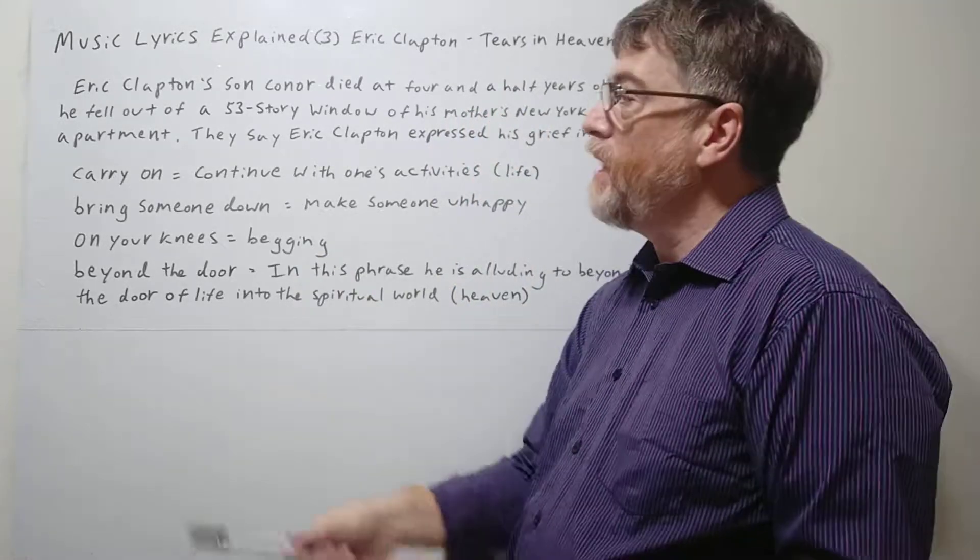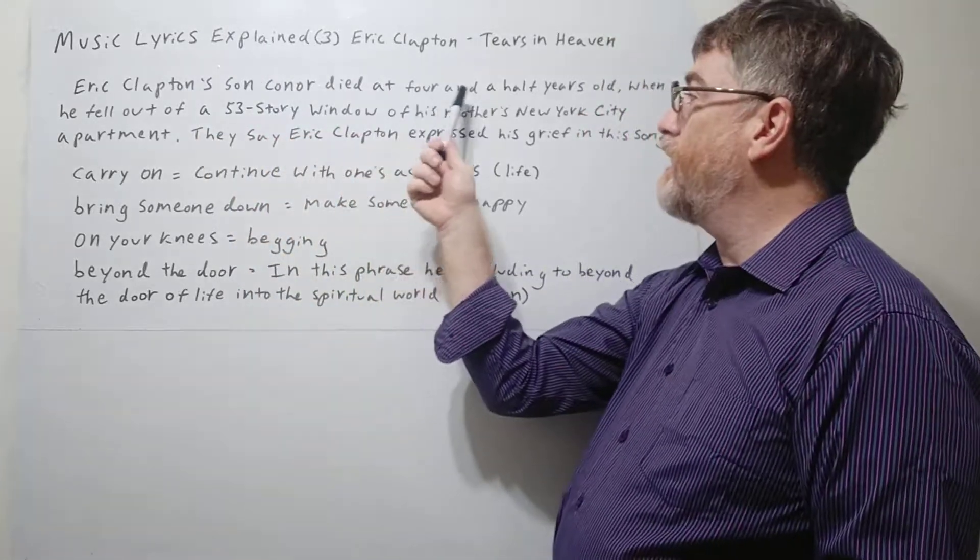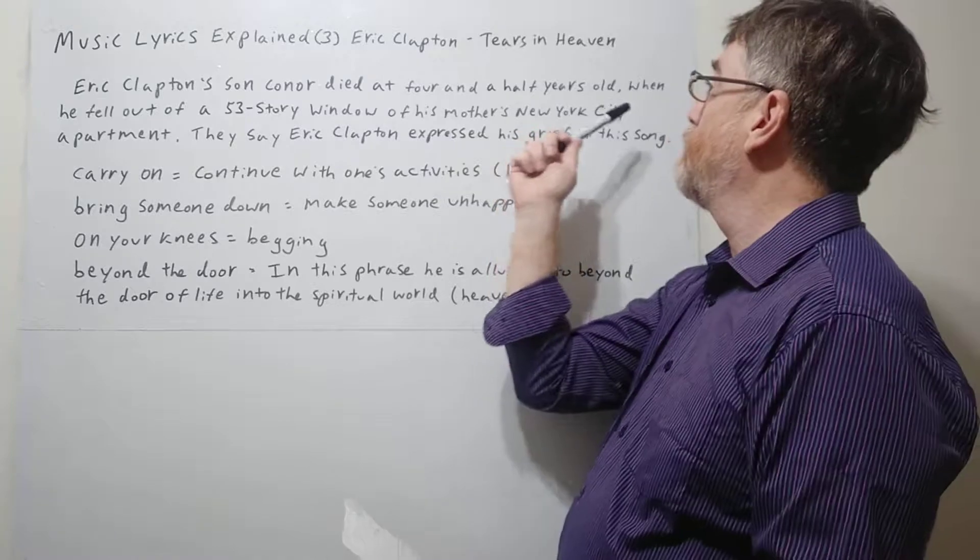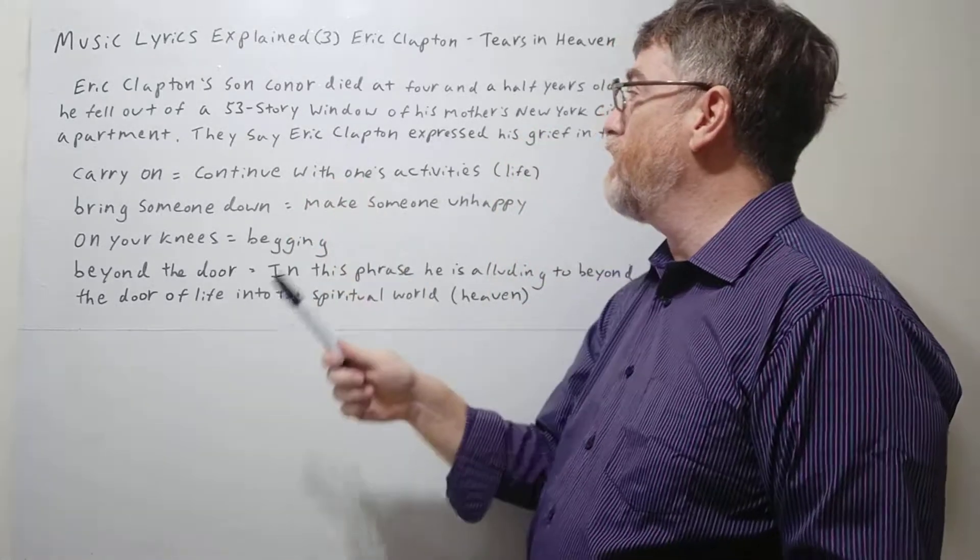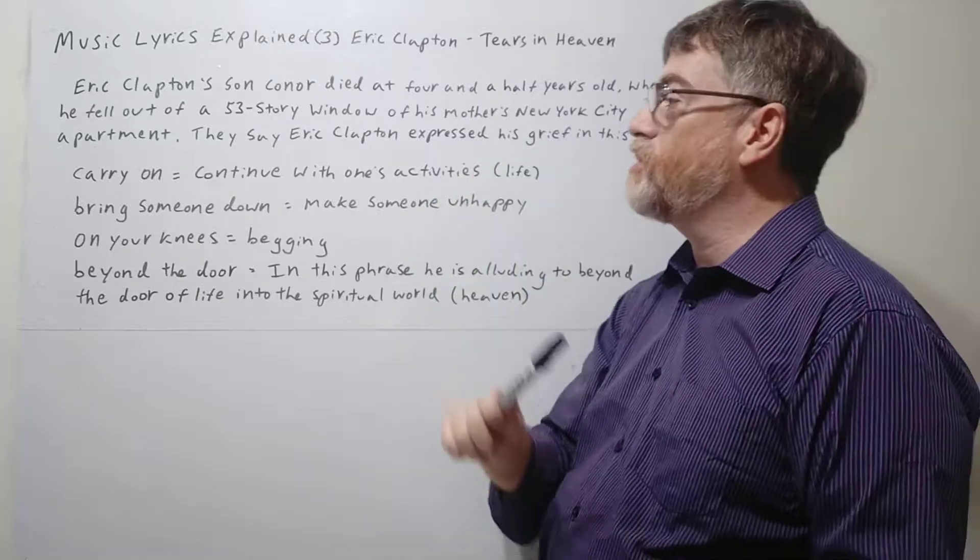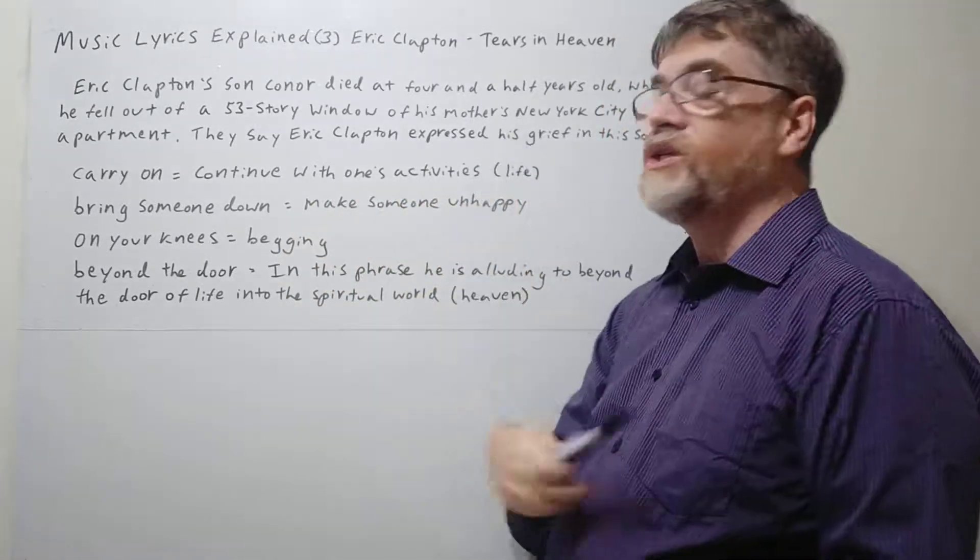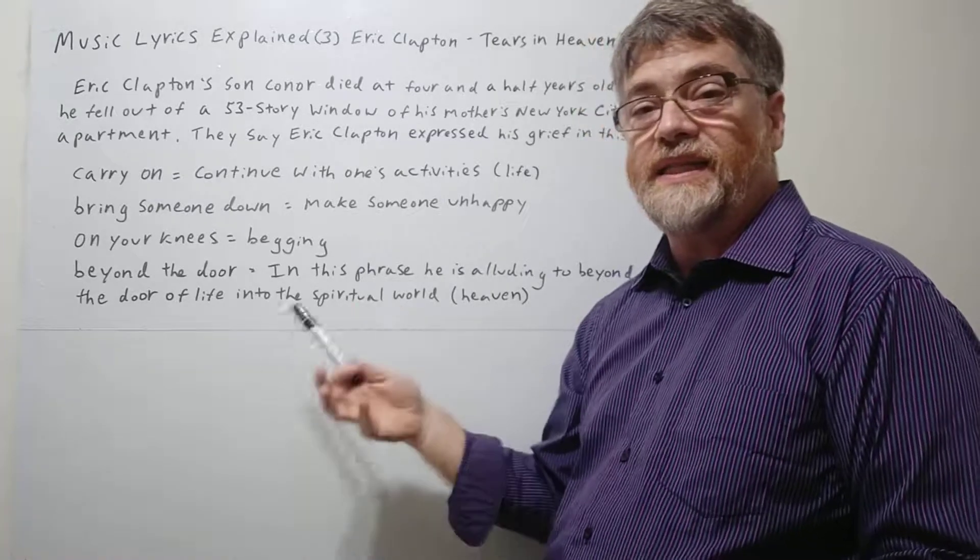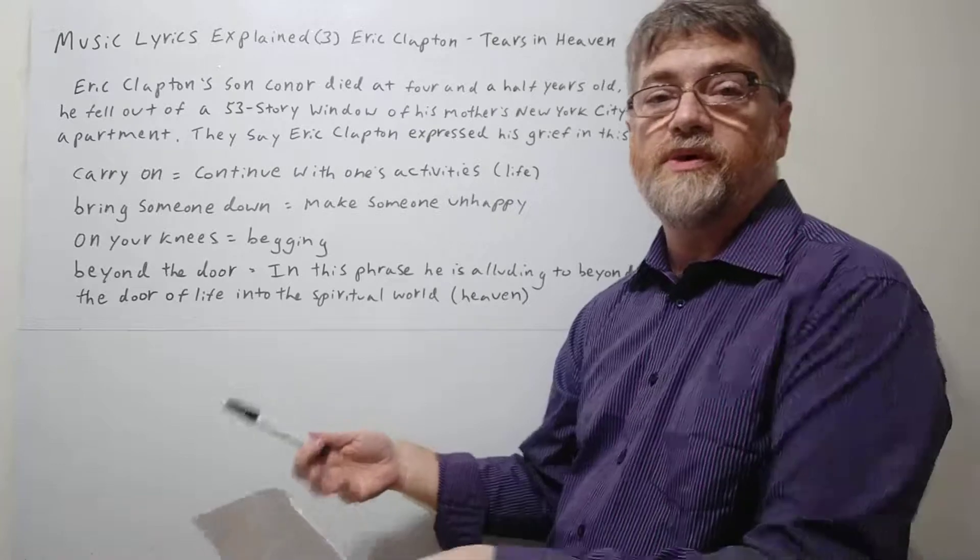Let's take a look at the note here first. Eric Clapton's son Connor died at four and a half years old when he fell out of a 53-story window of his mother's New York City apartment. They say Eric Clapton expressed his grief, his great sadness in this song. So you really need to know that as a background so it helps you to understand the words better.